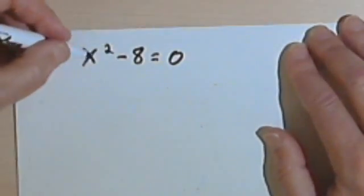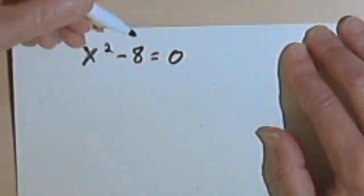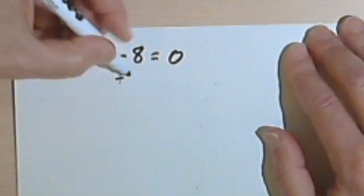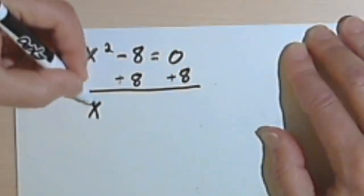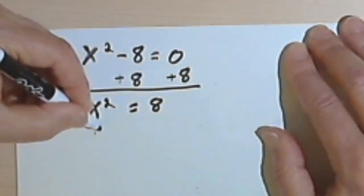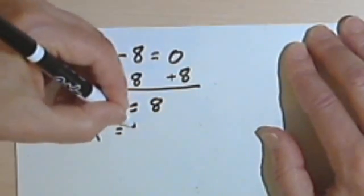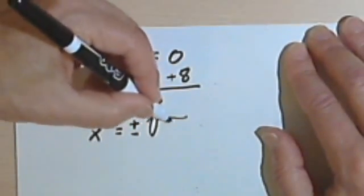In this one I've got x squared minus 8 equals 0. So isolating the x squared by adding 8 to both sides, we get x squared equals 8. So x is going to equal the positive and negative square roots of 8.